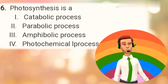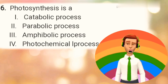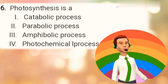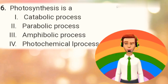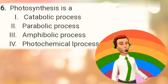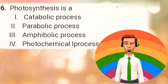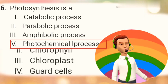Question number 6: Photosynthesis is a? Option 1: Catabolic process. Option 2: Parabolic process. Option 3: Amphibolic process. Option 4: Photochemical process. The right answer is Option 4 — Photochemical process.